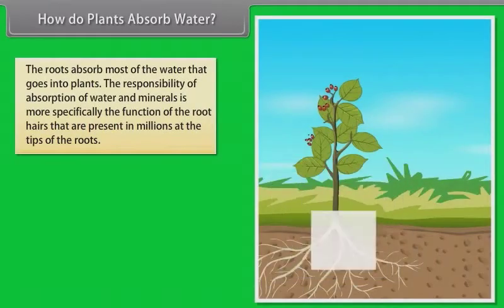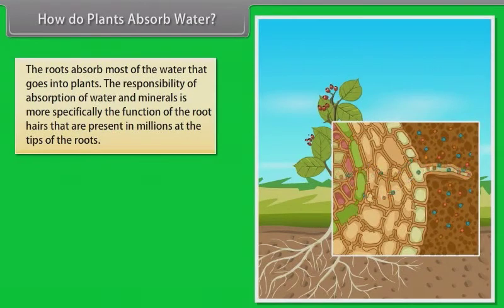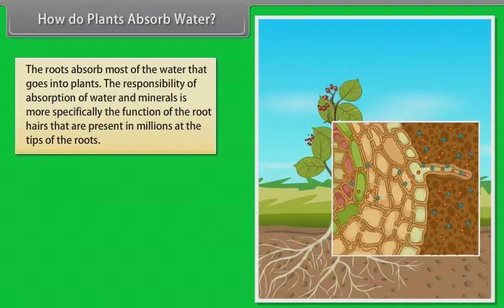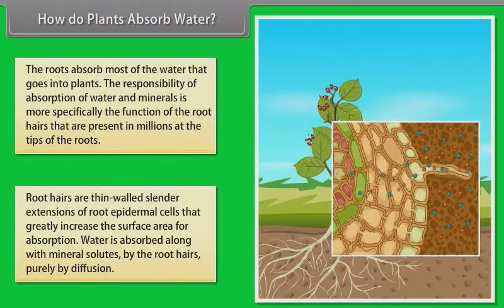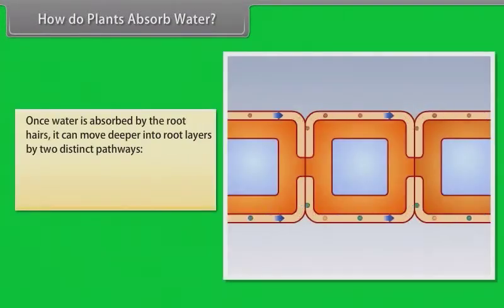Now let us understand how plants absorb water. The roots absorb most of the water that goes into plants — that is why we give water to the soil and not on the leaves. The responsibility of absorption of water and minerals is more specifically the function of the root hairs, present in millions at the tips of the roots. Root hairs are thin-walled, slender extensions of root epidermal cells that greatly increase the surface area for absorption. Water is absorbed along with mineral solutes by the root hairs purely by diffusion. Once water is absorbed by the root hairs, it can move deeper into root layers by two distinct pathways.